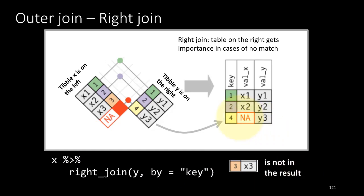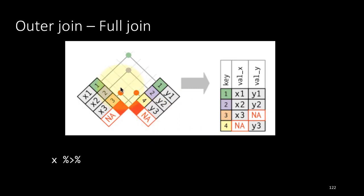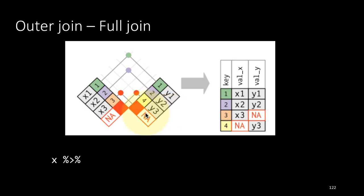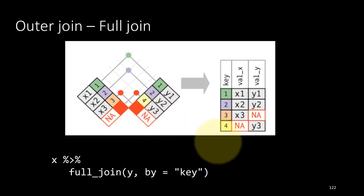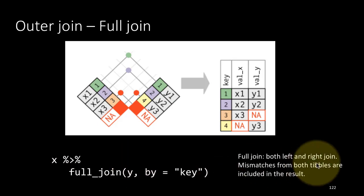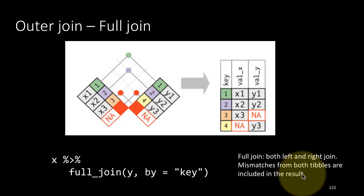Again, because it's the right join, the tibble on the right — namely y — gets priority when there is no match. The other kind of outer join is called the full join. With the full join, both x and y have equal priority, so any mismatches on either side will show up. Therefore, 3x3 and 4y3 both show up, but of course with NA for the appropriate values. We rarely use full joins — most of the time we'll be using inner join, and then either a left join or a right join.